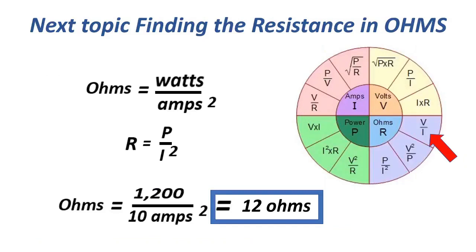The next formula for resistance: ohms equals watts over amps squared, or R equals P over I squared. That equals 1,200 over 10 squared, or 100, which equals 12 ohms.